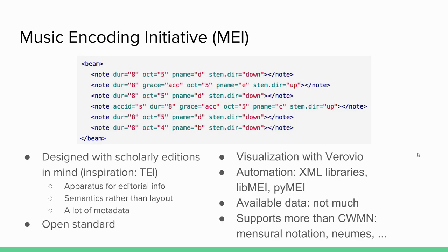Then there is the Music Encoding Initiative format, or MEI. It's also an XML format, inspired heavily by the Text Encoding Initiative, which created a very comprehensive standard for digital editions of text. The focus of MEI is on scholarly and critical editions of music, plus much more. Its capabilities are a superset of MusicXML — MusicXML can be imported into MEI.